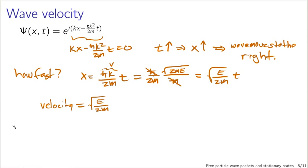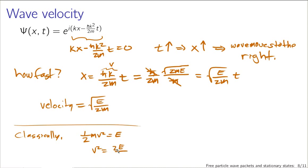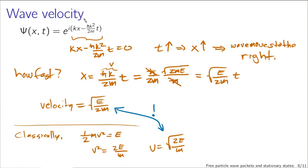Now classically, a particle moving at some velocity with energy E satisfies ½mv² = E, giving v = √(2E/m). These expressions are not equal to each other — that's a little strange. The velocity we got from quantum mechanics, looking at how fast features on this wave function move, is not equal to the classical velocity. Will this hold true regardless? Do quantum mechanical particles have a different propagation behavior? This is actually not a problem, because what we're measuring here is the velocity of a feature on the wave — it's not actually the velocity of a wave packet.